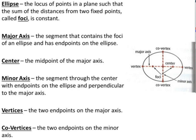An ellipse is the locus of points in a plane such that the sum of the distances from two fixed points, called the foci, is constant. If you were to take a string and attach it at the two foci — when you stretch the string out, the distance from this point and this point will touch the ellipse. If you move along a bit, adding those two red pieces together or those two blue pieces together will always be the same, and we draw the ellipse that way.